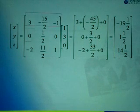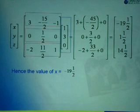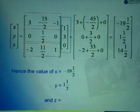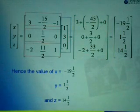This will be the answer for the question. From here, we can say the value of x equals negative 19 and a half, y equals 1 and a half, and z equals 14 and a half. That is the method we use to solve a simultaneous equation, whether it is a 2 by 2 or 3 by 3 matrix.